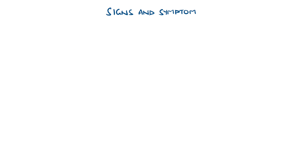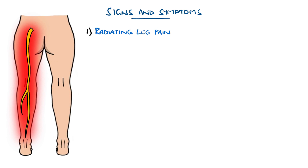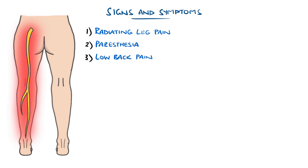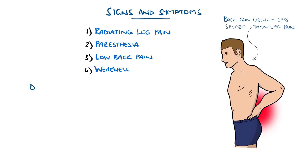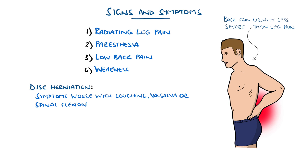Typical symptoms include leg pain radiating along the sciatic nerve path. The pain is described as burning or sharp. Tingling or numbness is also common, and back pain may or may not be present — if it is, it is often less severe than the leg pain. Weakness in the affected leg is also possible. Coughing, spinal flexion, or the Valsalva manoeuvre may worsen the pain in cases of disc herniation, while worsening on extension of the spine is more suggestive of spinal stenosis.